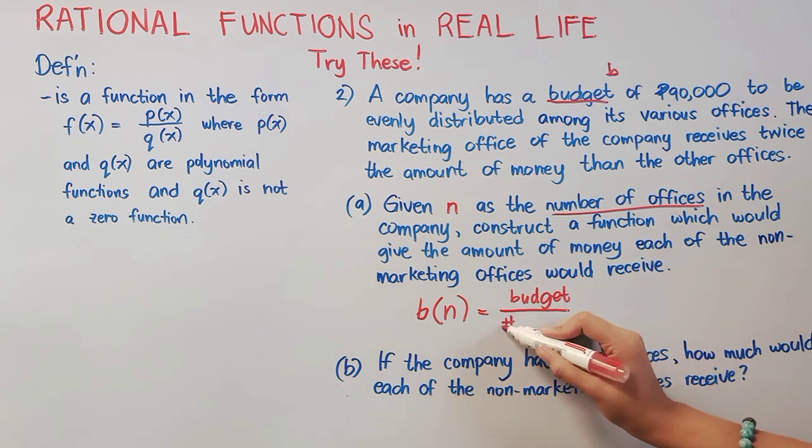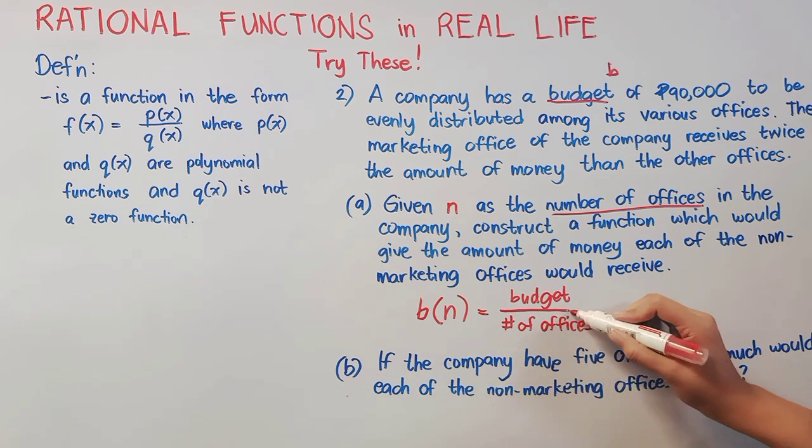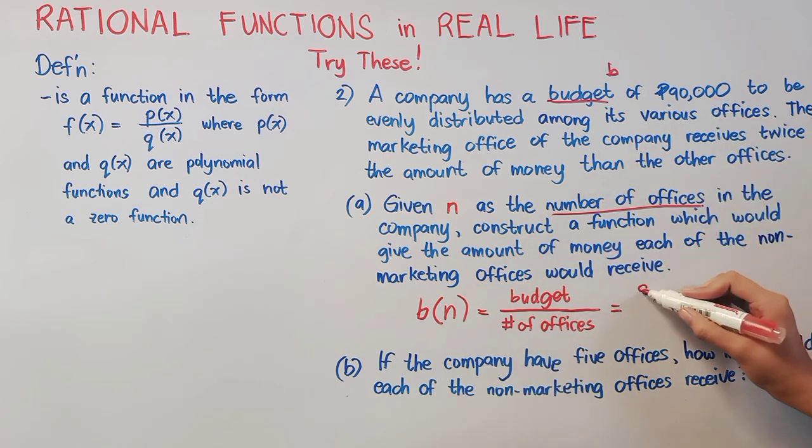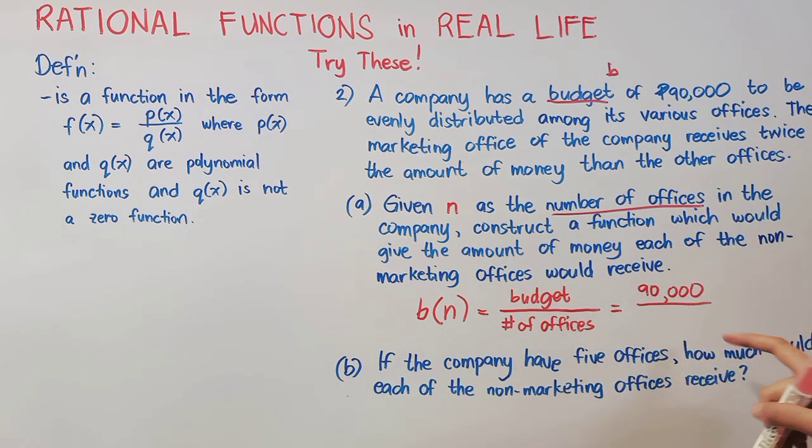So, our function here is the budget in terms of the number of offices. So, we will simply divide the budget over the number of offices that a company have. And our budget is fixed at 90,000 and our number of offices is still unknown. Now, remember that the marketing offices receives twice. So, we'll have to add 1 here in the number of offices.